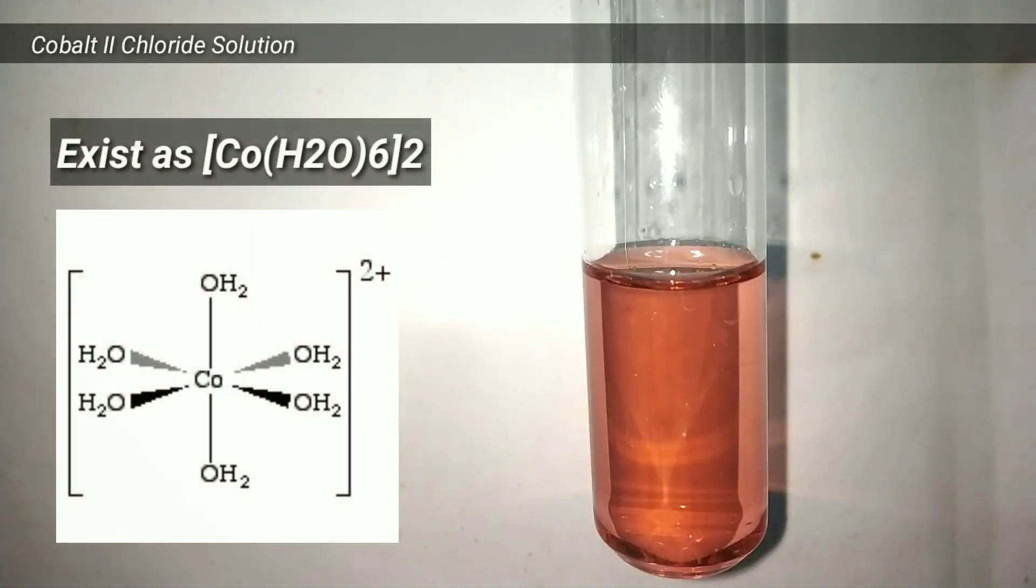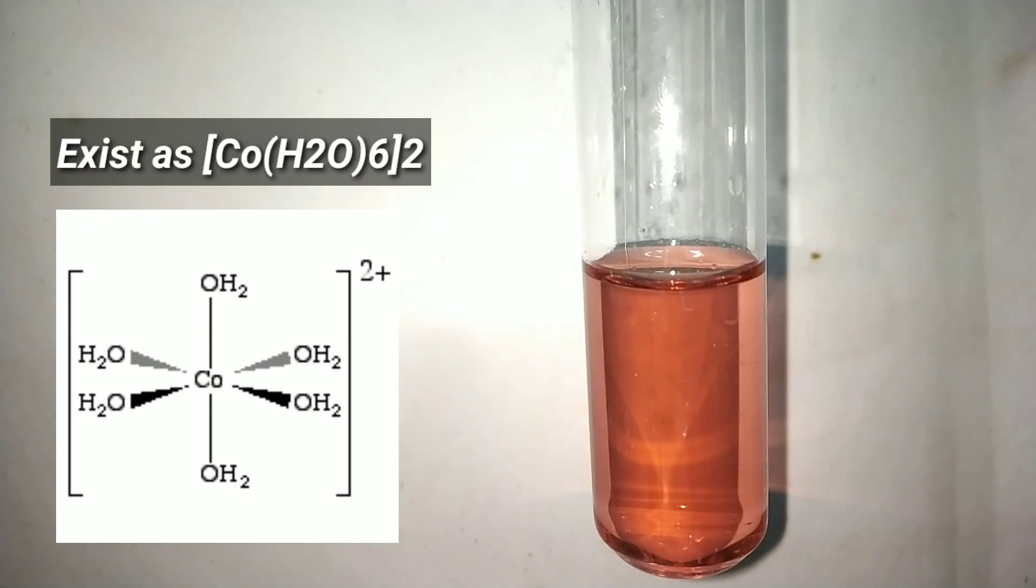In the following video clip, we see some chemical reactions of cobalt compounds. I am using cobalt 2 chloride solution. In this solution, it exists as a complex where cobalt ion is surrounded by six water molecules.